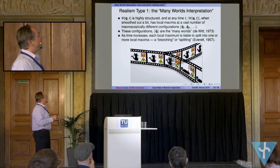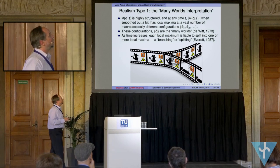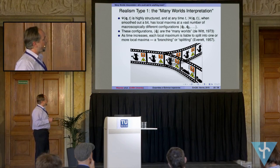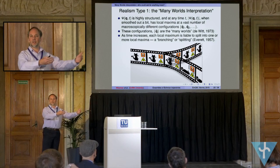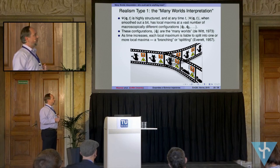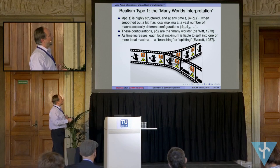So you could think of these as being many worlds. This is not exactly the way it was first presented, but if I wanted to relate it back to the Bohmians, I think this is a clear way of saying it. As time increases, what you find also is that these local maxima are liable to split into two or more other local maxima as time goes on. And this is exactly the sort of branching or splitting that Everett talked about in 1957.